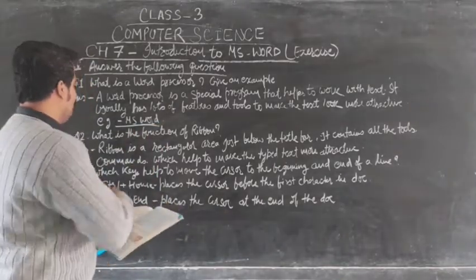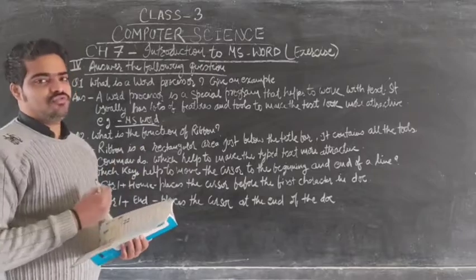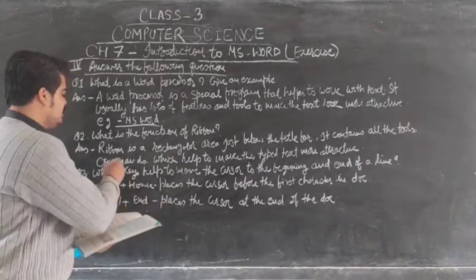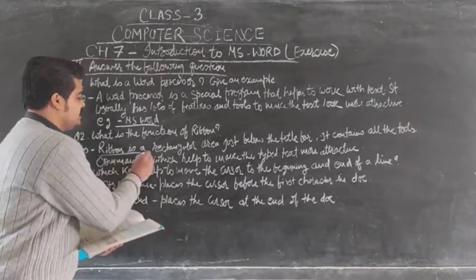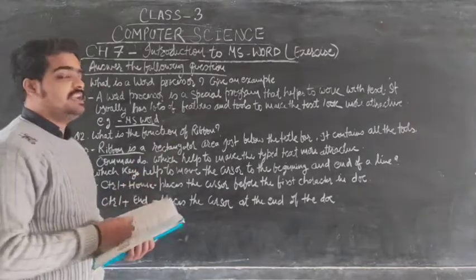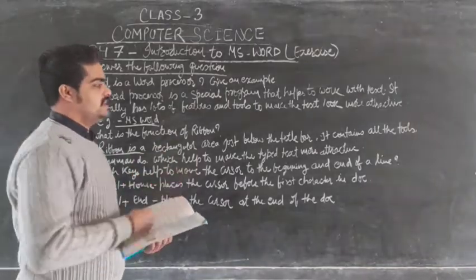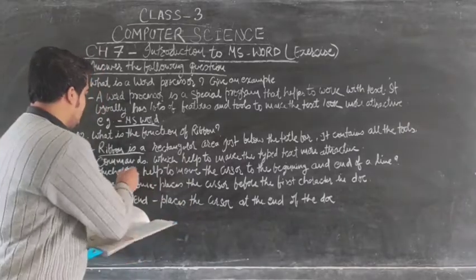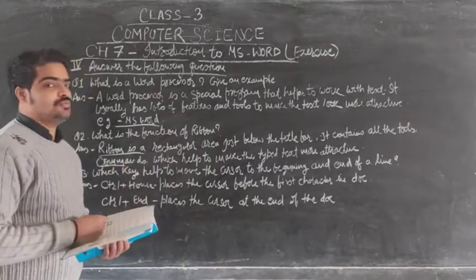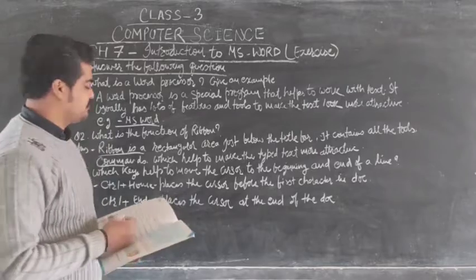Question two — what is the function of ribbon? The ribbon is a rectangular area just below the title bar. It contains all the tools and commands which help to make the typed text more attractive.